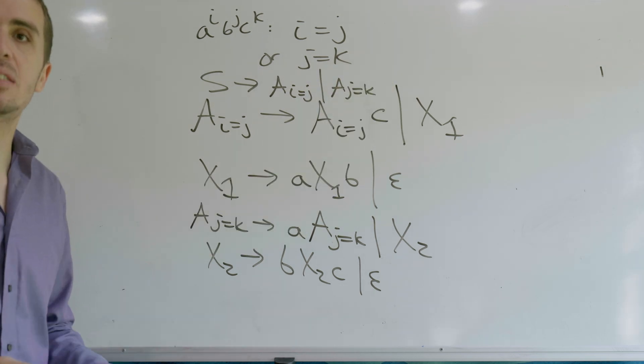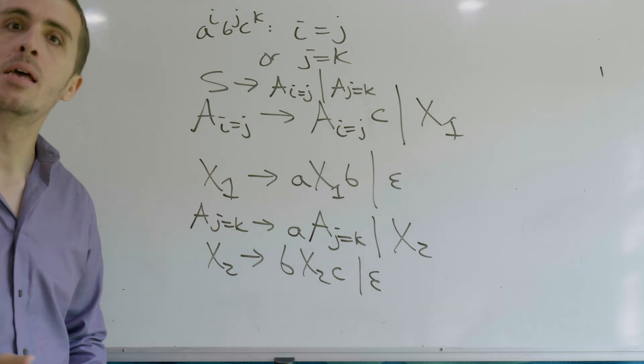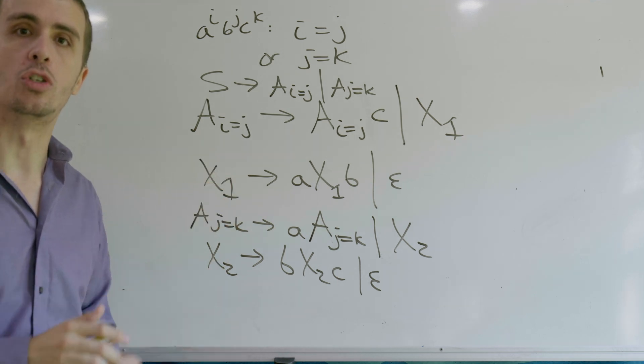And that is a fairly easy context-free grammar for the set of all strings of the form A to the i, B to the j, C to the k, where i is equal to j or j equals k.